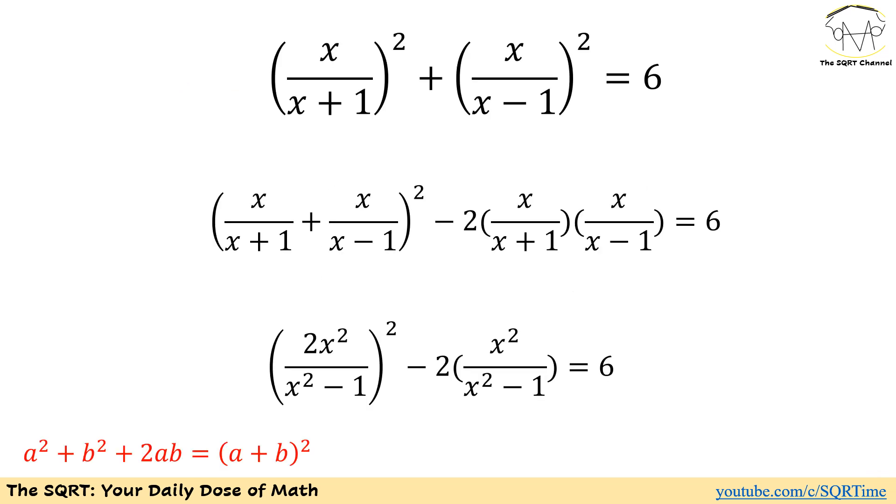To solve this problem we are going to use a trick. First of all note that a squared plus b squared plus 2 times a b is equal to a plus b to the power of 2. So instead of writing the first one to the power of 2 plus the second one to the power of 2 we are going to write it as the first one plus the second one to the power of 2 minus 2 times the first one times the second one. Let's do that.